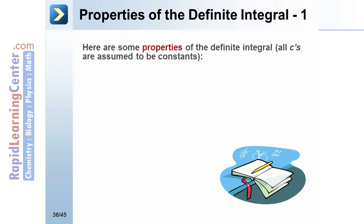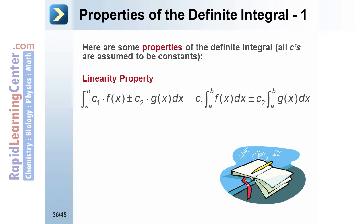Here are some properties of the definite integral. All c's are assumed to be constants. Linearity property: the integral of c1 times f of x plus or minus c2 times g of x equals c1 times the integral of f of x plus or minus c2 times the integral of g of x.